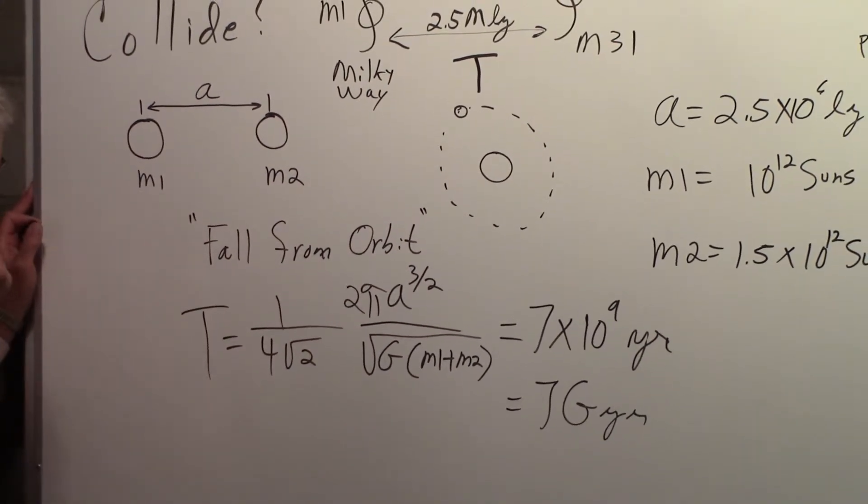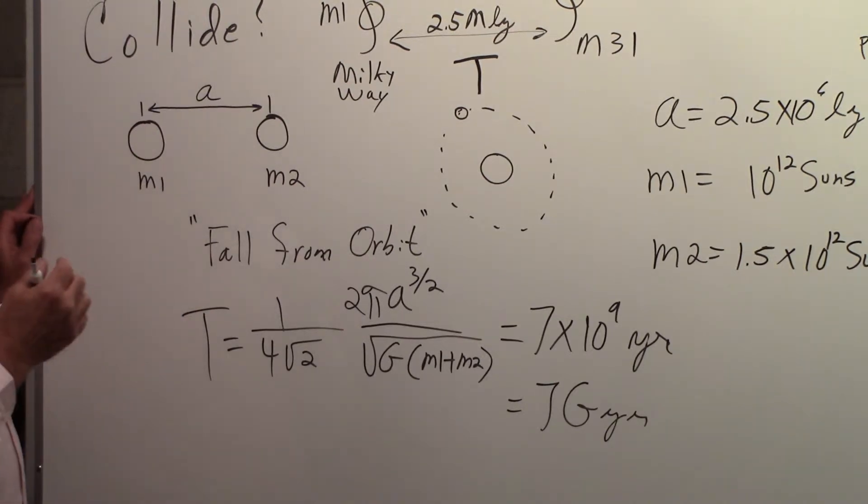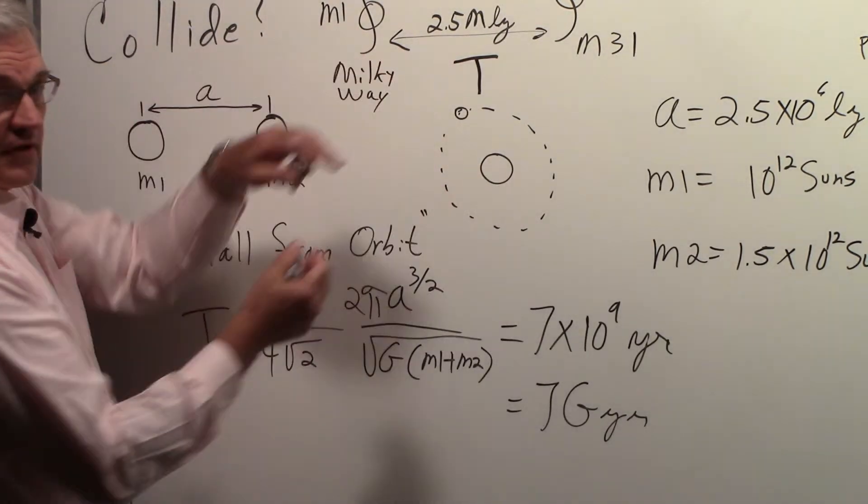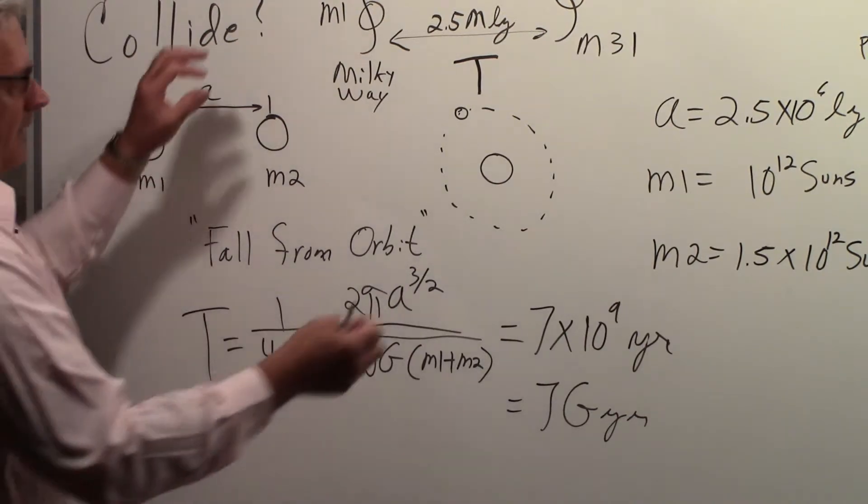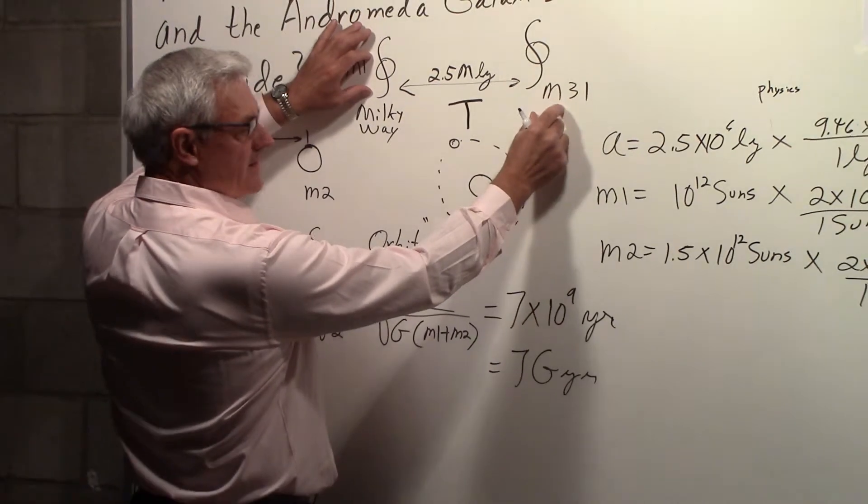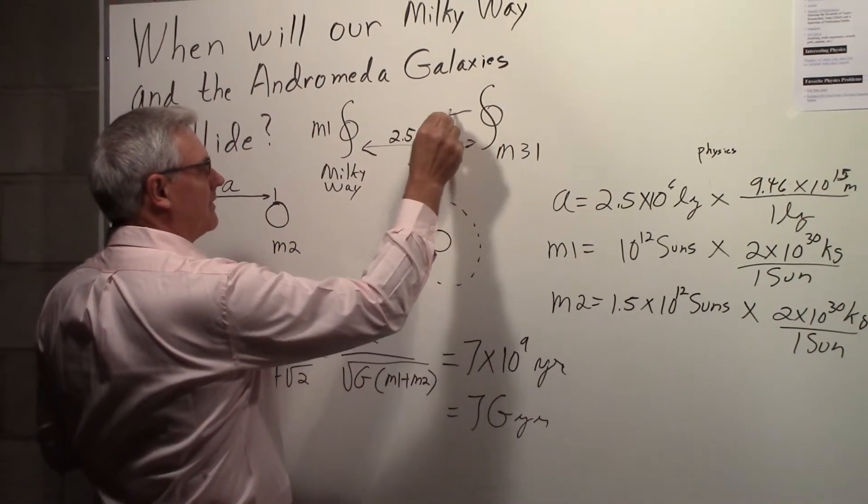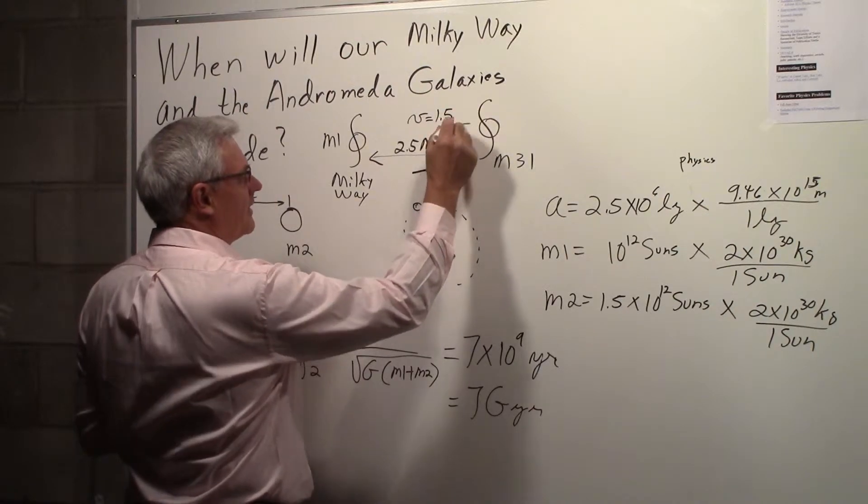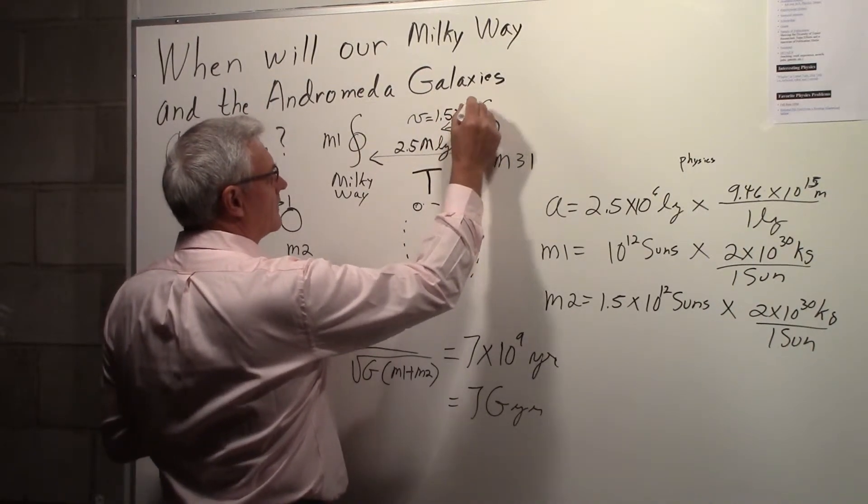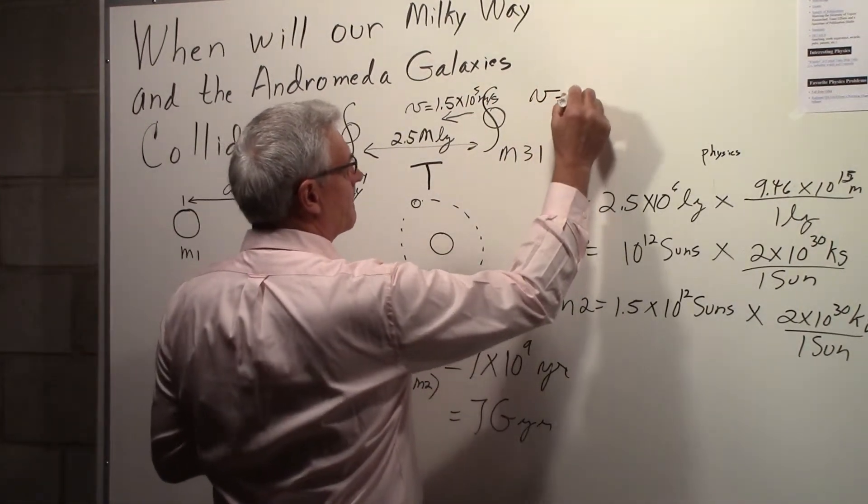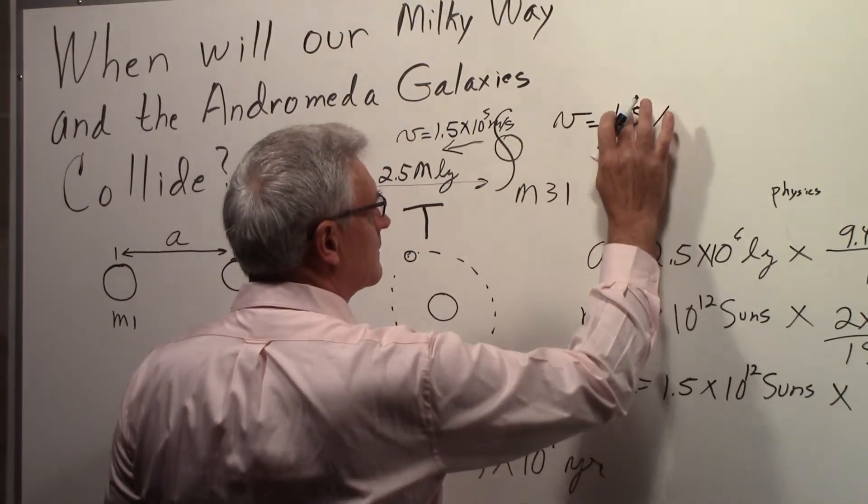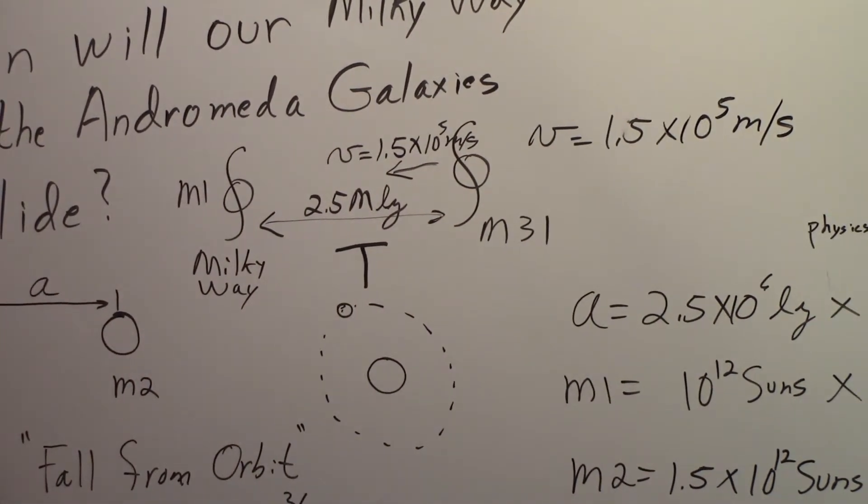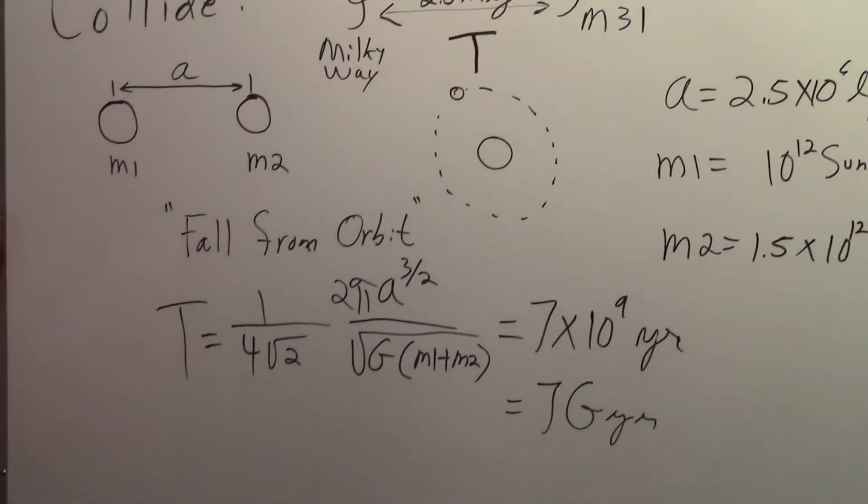Except that number is not quite right. The reason that number isn't quite right is the equation that I used here was for starting out with zero velocity. In other words, Milky Way and M31 are fixed, you release them and they come towards one another. But M31 is moving with a velocity towards the Milky Way of 1.5 times 10 to the 5th meters per second. So that has to be worked into the calculation.